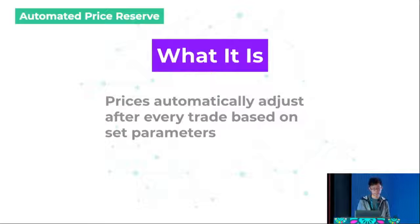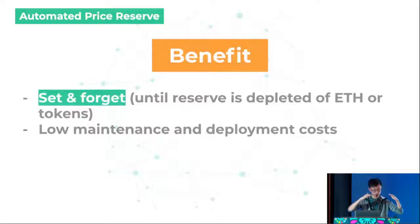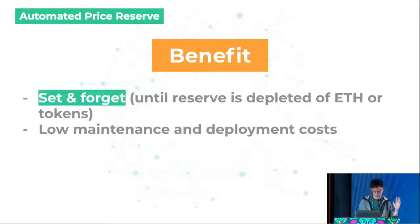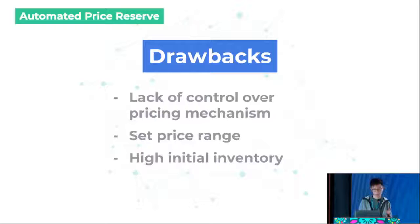The second reserve type, offered mainly to project teams, is the Automated Price Reserve. It works similarly to how Bancor and Uniswap models work — prices automatically adjust after every trade. All the reserve manager needs to do is set initial parameters and then leave it to run, and it works like magic. There is also low maintenance and deployment cost — just deploy the reserve contract and the liquidity conversion rates contract and leave it to run. The drawback is that you're relying on our pricing mechanism, so you don't have full control. It only works for a set price range — unlike Uniswap which can work for an infinite range — and it requires a high initial inventory capital to start.